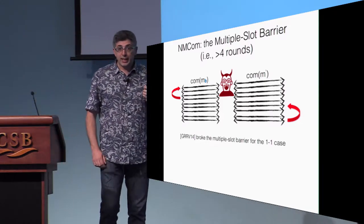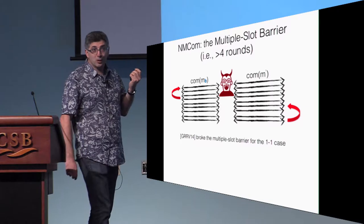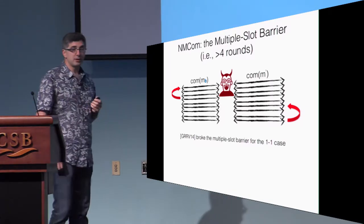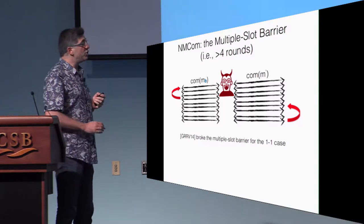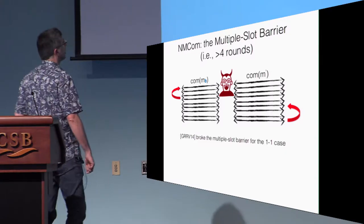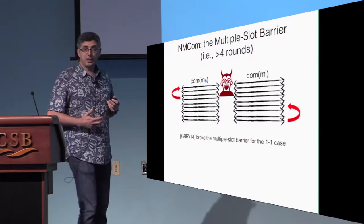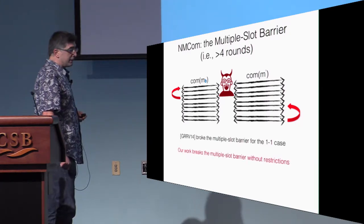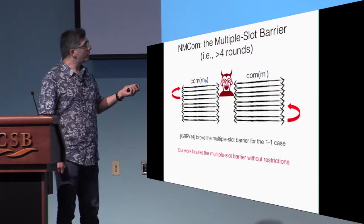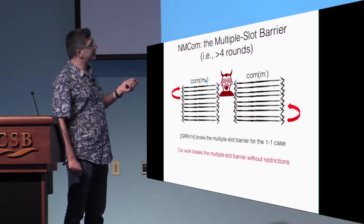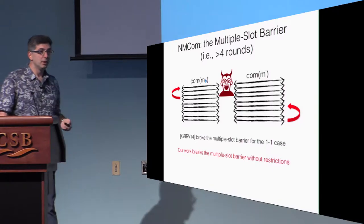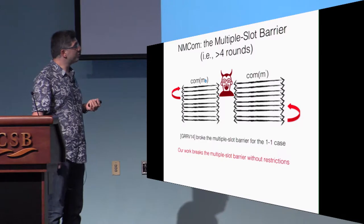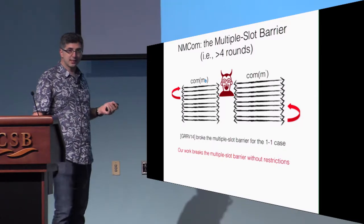The problem of breaking the more-than-four-round barrier — the multiple-slot barrier — was solved by Goyal et al. in 2014, showing a non-malleable commitment scheme in just four rounds from one-way functions. This required significantly new techniques. But it was limited to the one-to-one case where the man-in-the-middle plays with one sender and one receiver. In this work, we break the multiple-slot barrier with a four-round construction with full concurrency — multiple senders and multiple receivers.